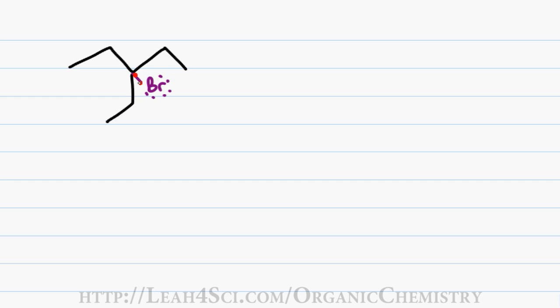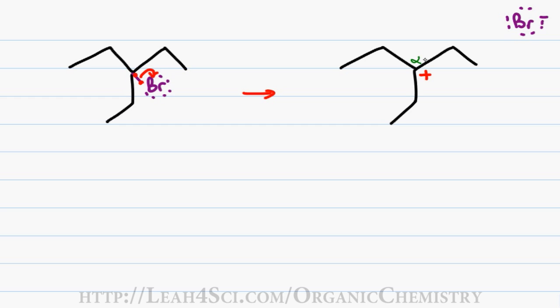The E1 reaction starts when the leaving group grabs the two bonding electrons and breaks away from the carbon molecule, dissolving in solution. The carbon that held the leaving group is now electron-deficient and gets a formal charge of +1. This tertiary carbocation is stable in solution and further stabilized by the surrounding polar protic water molecules. The alpha carbon holds the carbocation and any carbon directly attached to it is beta — on this molecule we have three equivalent beta carbons due to the molecule's perfect symmetry.